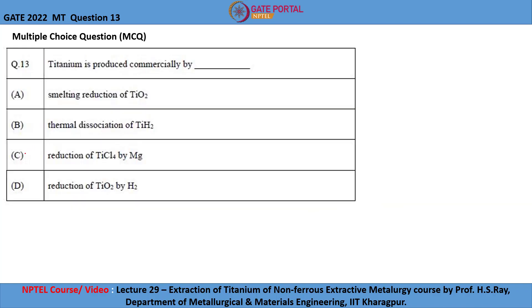So, the correct option is option C, which is Kroll's process.